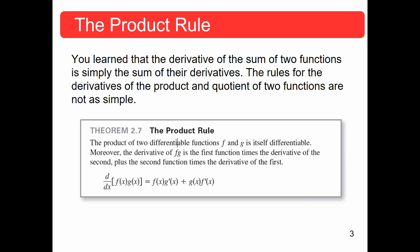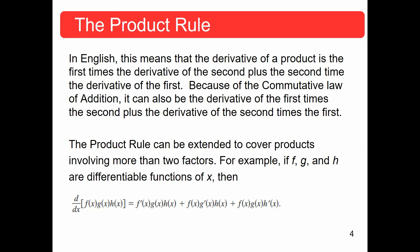This is the product rule. If we have two functions f and g, and each one of them is differentiable — that's the important part — then the derivative of their product will be the first function times the derivative of the second, plus the second function times the derivative of the first. So if you've got two functions f and g, then we're looking at f·g' + g·f'.